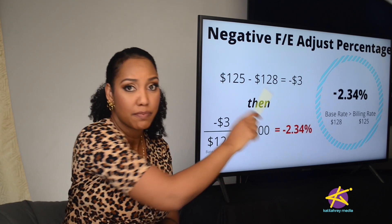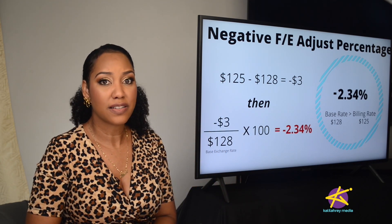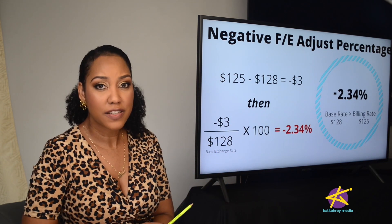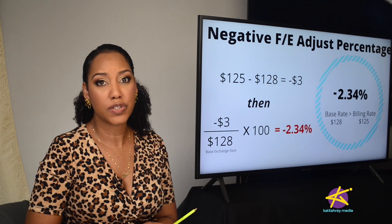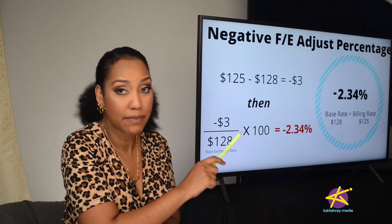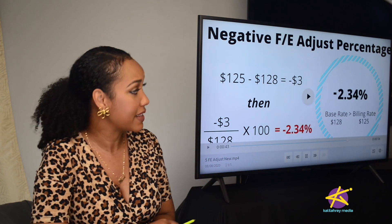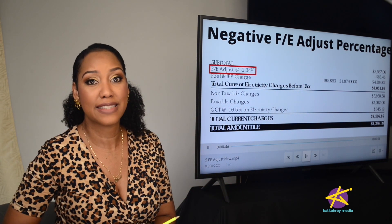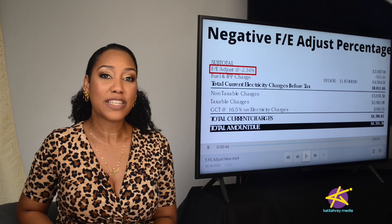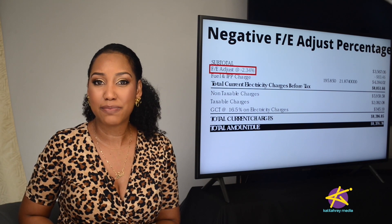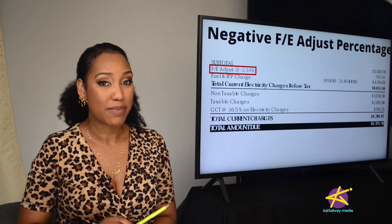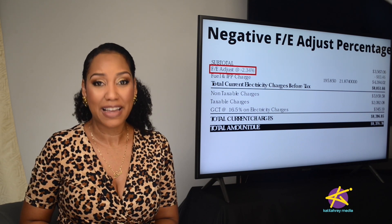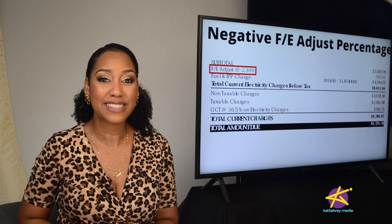A negative percentage means that the customer will subtract 2.34% off the subtotal from the total amount due, and that would bring your light bill down. You can see on this bill they actually deducted $83.46. I hope you understand Foreign Exchange Adjustment a little bit better now. Comment below and let me know what else you want to know about your light bill. Stay tuned for more — Taking Stock.